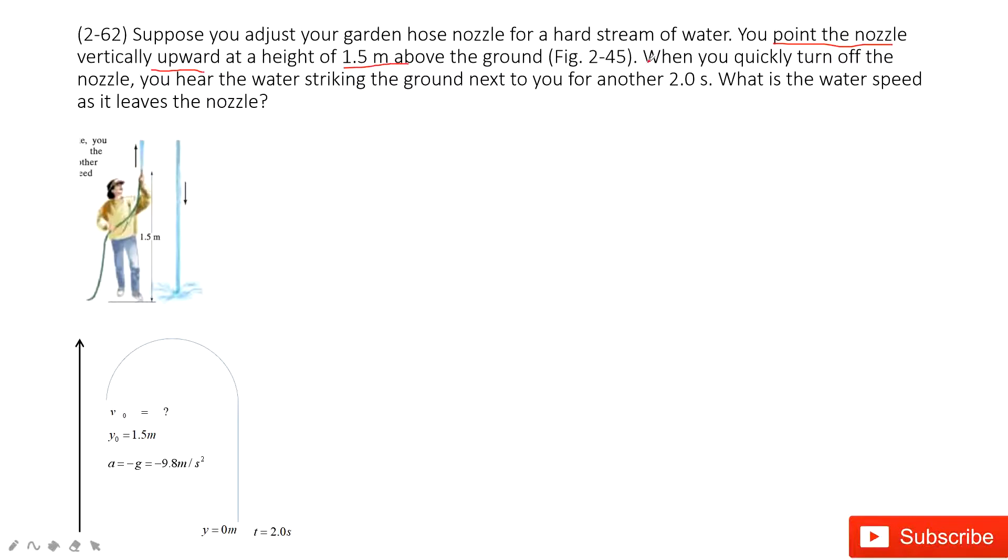When you quickly turn off the nozzle, you hear the water hit the ground next to you after another 2 seconds. This tells us the initial position is here, and the final position is here. At the final position, y is 0 meters, and the time taken is 2 seconds.